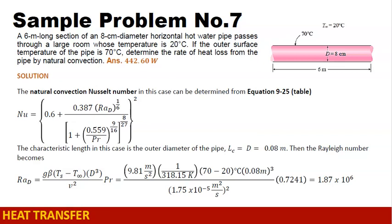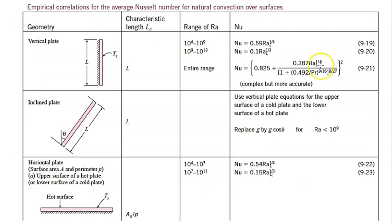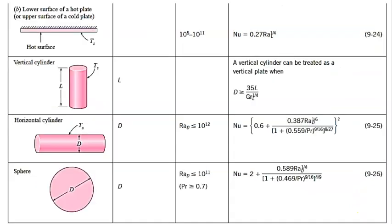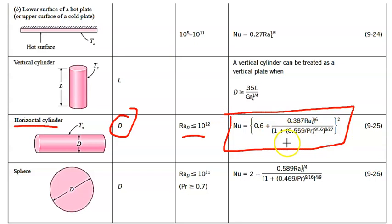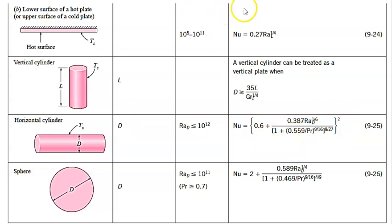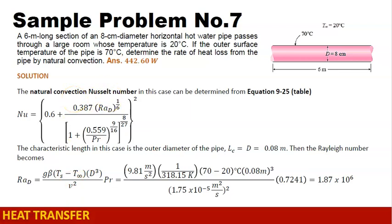Looking at the table on slide 76, we find the geometry is a horizontal cylinder. The characteristic length LC equals the diameter of the pipe, and the Rayleigh number should be less than 10 to the power of 12. The formula for the Nusselt number is equation 9-25 from the table, and we will use this equation for the Nusselt number.